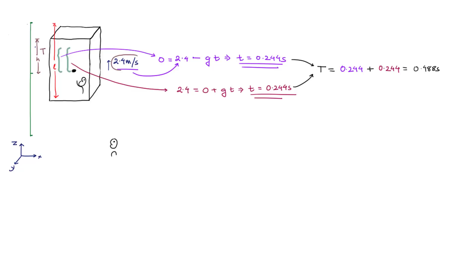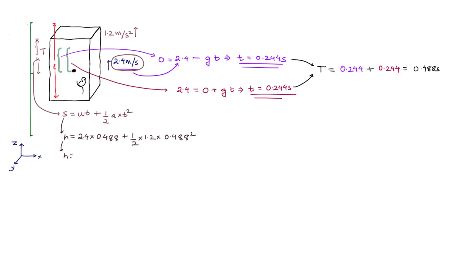We can calculate the height the elevator car covered in that time, starting with an initial velocity of 2.4 meters per second upward and acceleration of 1.2 meters per second squared, using the second equation of motion — s = ut + ½at². We get a value of 1.3 meters. So the remaining distance the bolt must cover in the frame of reference of the elevator car is 1.4 meters.